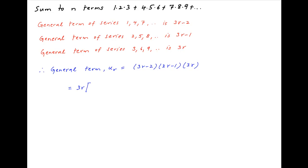This is equal to 3r times (9r squared minus 9r plus 2), which is equal to 27r cubed minus 27r squared plus 6r.